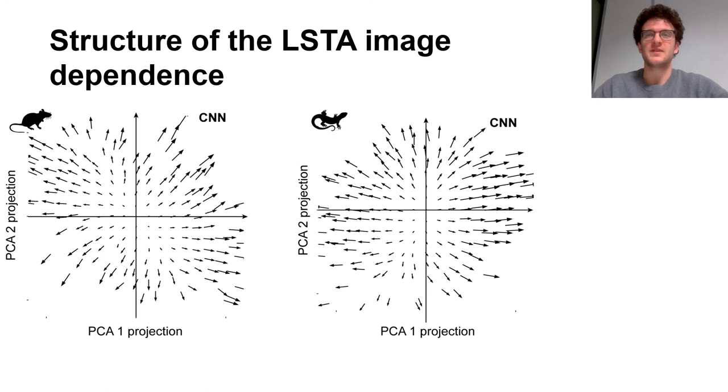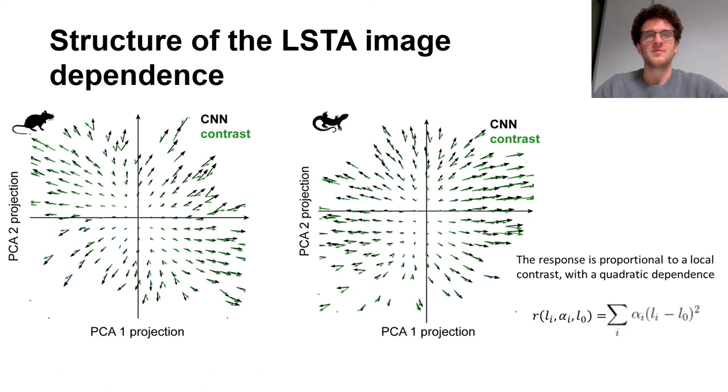To probe this, we defined a contrast model in which the neural response is proportional to the sum of the square difference of the pixel intensities inside the receptive field of the neuron. With this second model, we obtained the arrow fields in green. As you see, the accordance is good, and this makes us believe that those apparently mysterious cells that show a change of ON-OFF selectivity across the stimulus space are actually robustly encoding contrast.